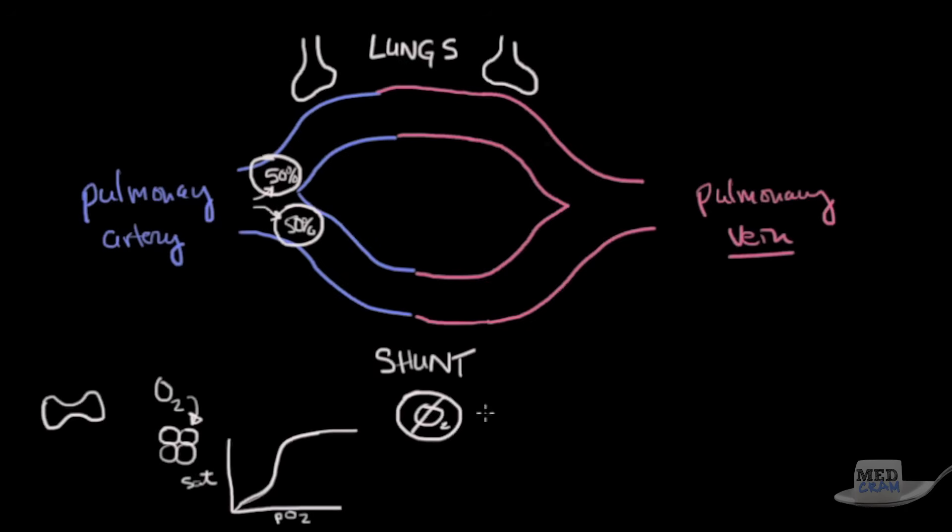The important thing to take from this is that this goes to the body after the left ventricle pumps it. And the amount of oxygen that is delivered to the body, the DO2, is directly proportional to the saturation of oxygen. So that's going to be very important, the oxygen saturation. That's the lion's share of oxygen that is delivered to the peripheral tissues.